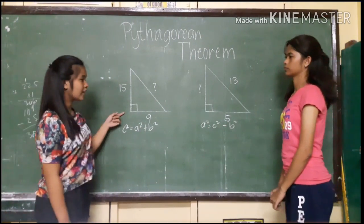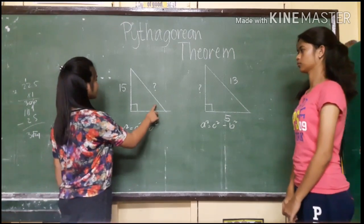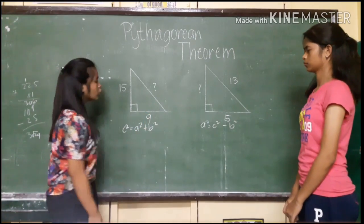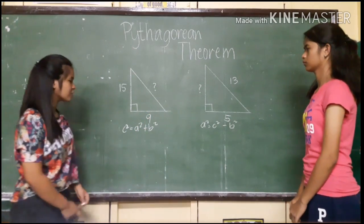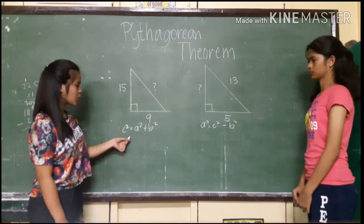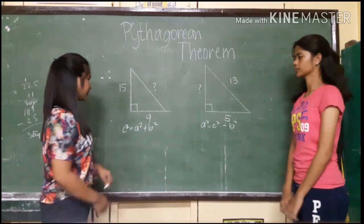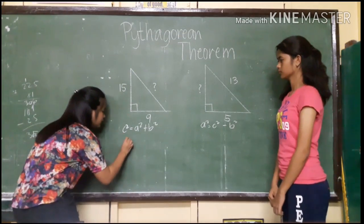In this right triangle, the hypotenuse is missing. So we can use the formula c squared equals a squared plus b squared.